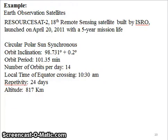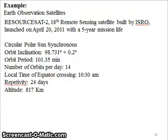That video gave an idea of how geostationary and polar orbiting satellite orbits look. Some examples of polar orbiting or sun-synchronous satellites include ISRO's Resource Sat 2, which is the 18th remote sensing satellite built by ISRO with a 5-year mission, launched on April 20th, 2011. This is a circular polar sun-synchronous orbiting satellite with an orbit inclination of 98.73 degrees (±0.2 degrees) and an orbital period of 101.35 minutes.